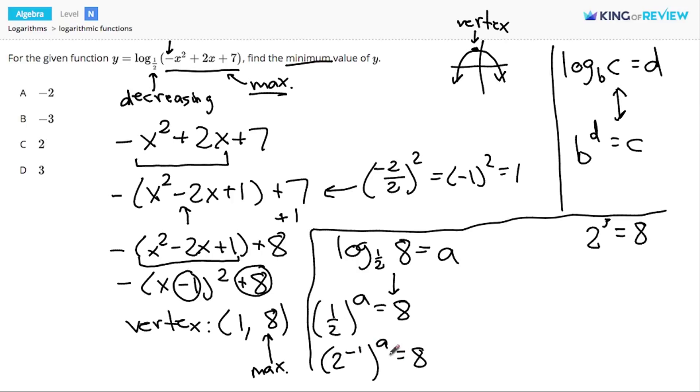There's one more property we need, the property of exponents that says if we have x to the a power, and that's raised to the b power, that really is just x to the a times b power. So we have 2 to the negative a equals 8.